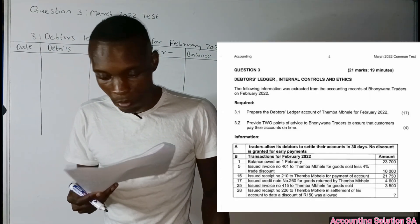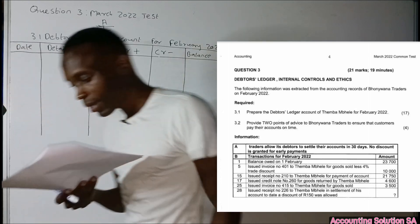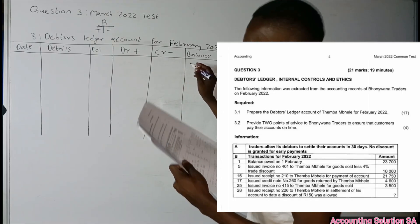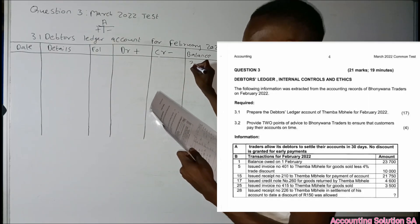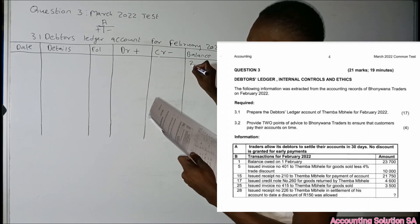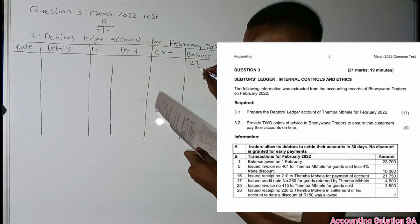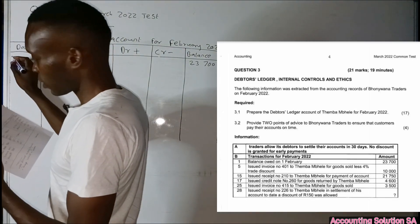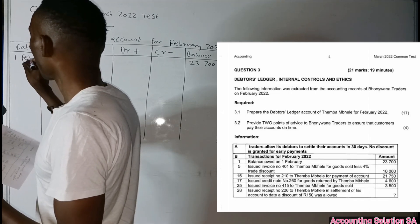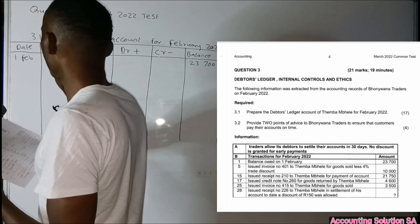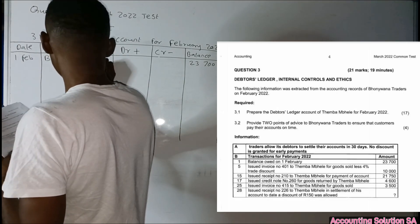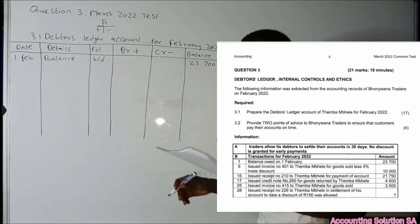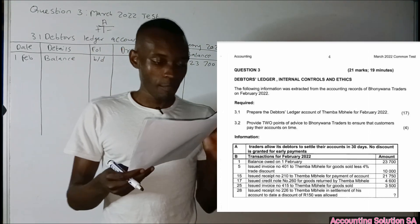Number one: the balance owed on 1 February was 23,700. We record it under 'balance' and indicate the date as 1 February. Under the detail we write 'Balance Brought Down.' On the debit and credit columns we do not write anything when we record the opening balance.